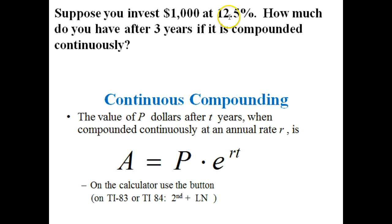R is just the rate, 12 and a half percent, and T is the time. Time would be three years in this case. And I have the note here in the TI-83 and 84 to be second plus LN. We'll show you where that is here in a second.